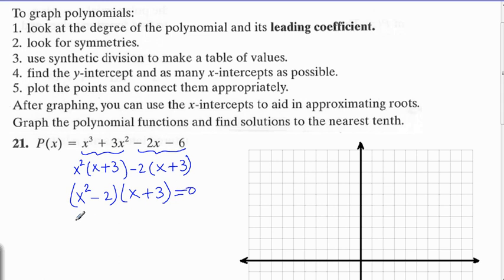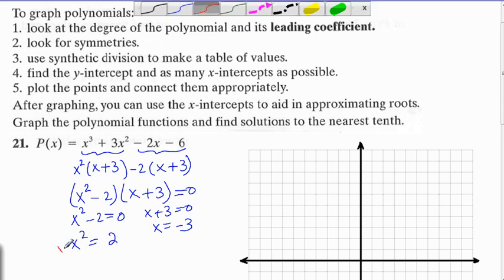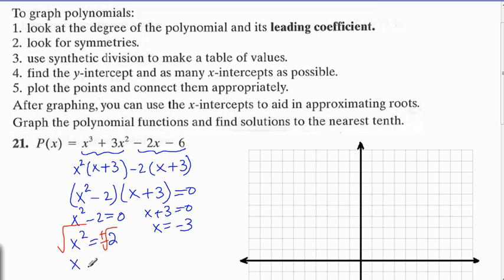That means our x-intercepts are x-squared minus 2 equals 0, and x plus 3 equals 0. So, x equals negative 3, and x-squared equals 2. We take the square root of both sides. Don't forget the plus or minus when we take the even root of both sides. So, that gives us plus or minus radical 2, and x equals negative 3. These are our x-intercepts.